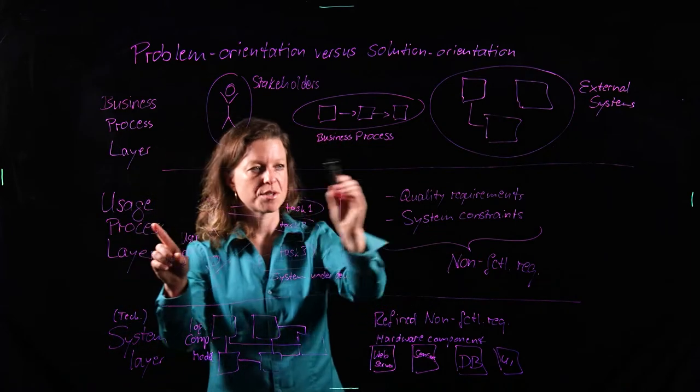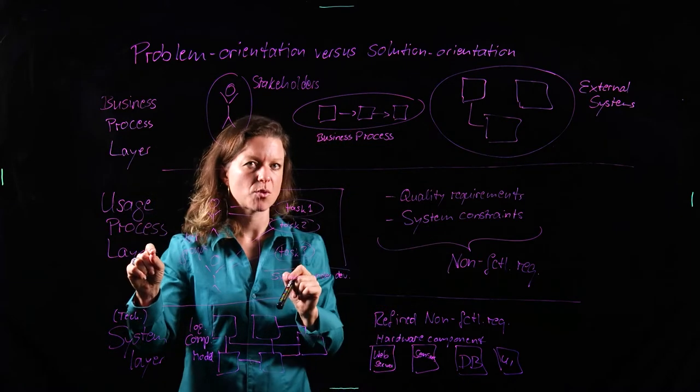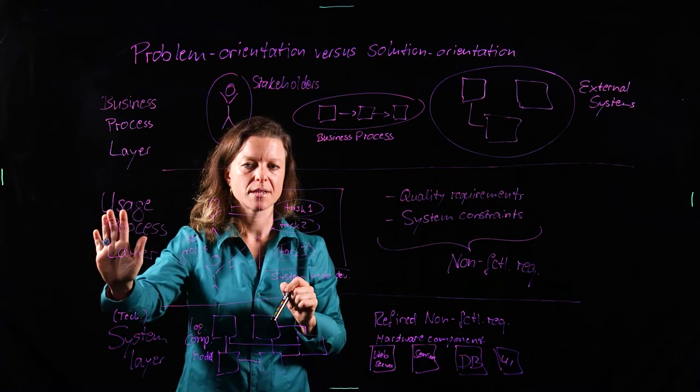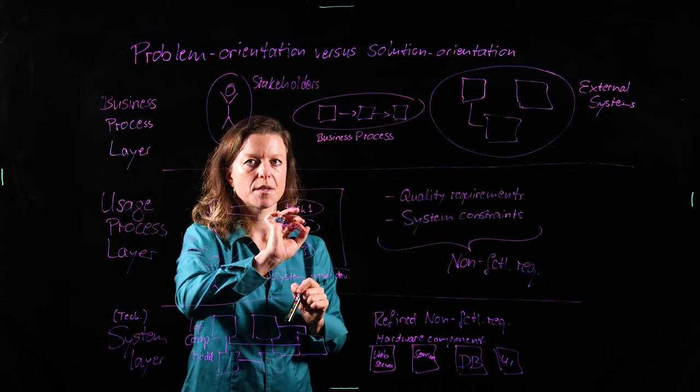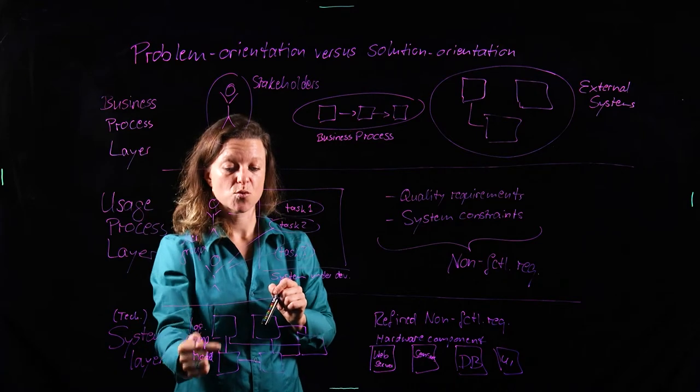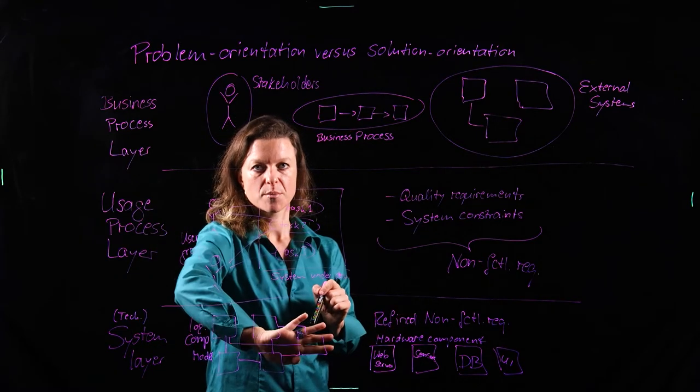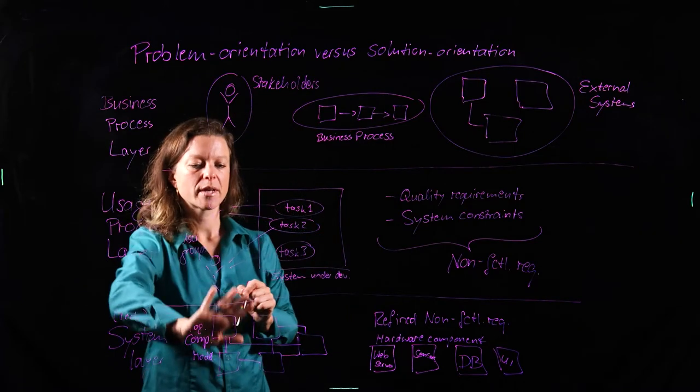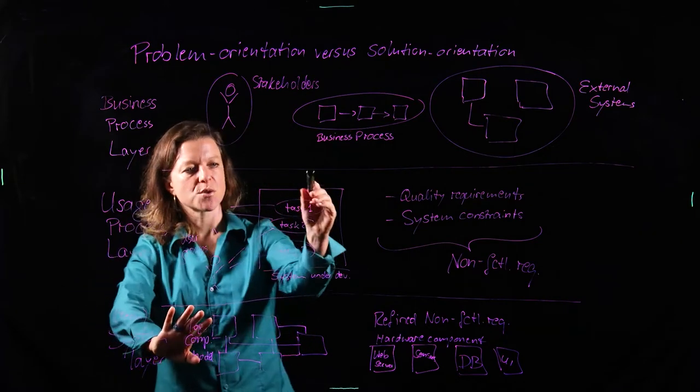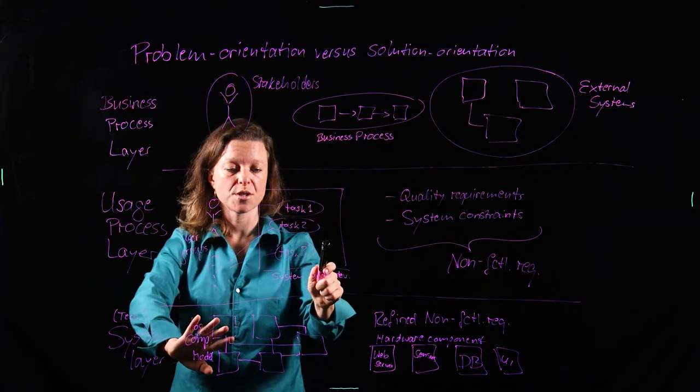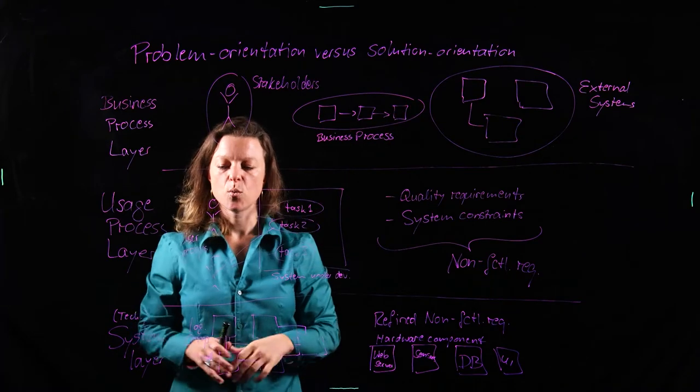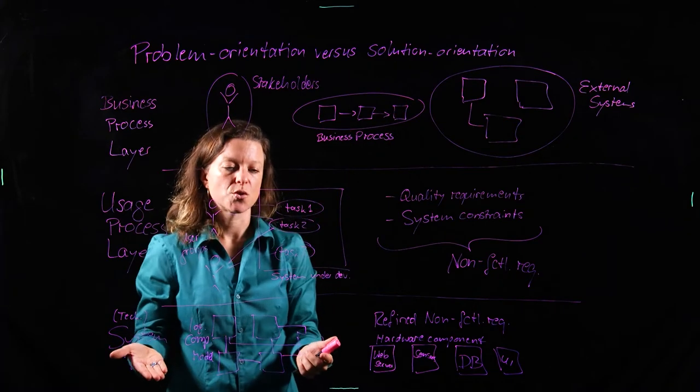Once we have that part done, I didn't tell you the problem yet. So the problem that we tackle on this layer is, what does the user interaction look like? The problem we still abstract from is, how is that going to be divided into hardware and software? So that's what we look at on the third layer. So here we are somewhere between problem orientation and solution orientation. And down here, we finally get to complete solution orientation.